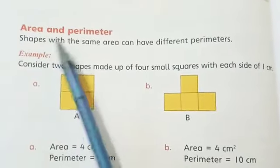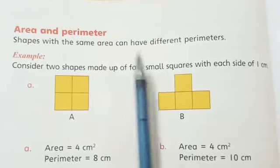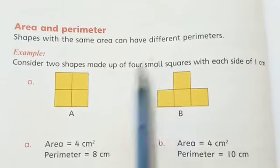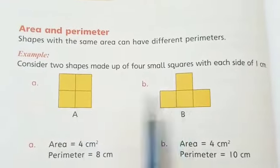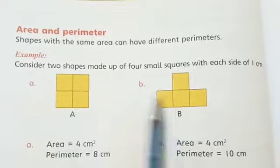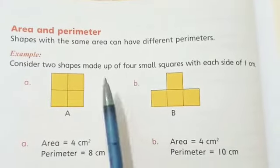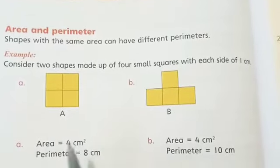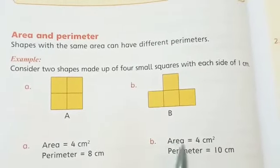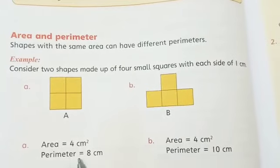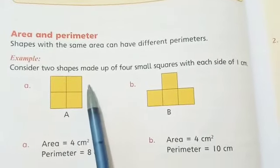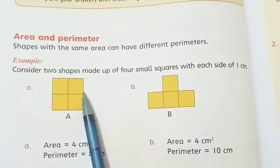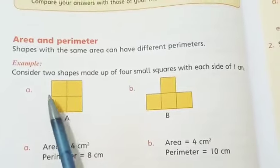We have to compare area and perimeter. Shapes with the same area can have different perimeters. Consider these two shapes, shape A and shape B, both made up of 4 small squares. This area is 4 cm² and this is also 4 cm². But the perimeter of A is 8 cm: 1, 2, 3, 4, 5, 6, 7, 8.